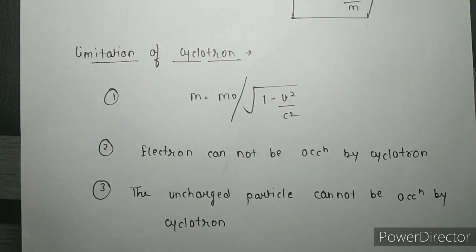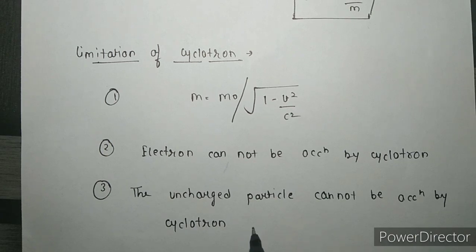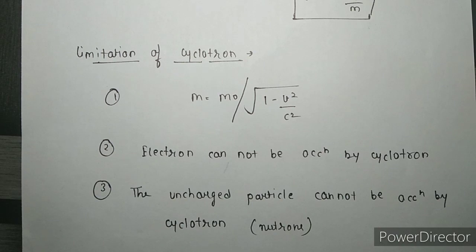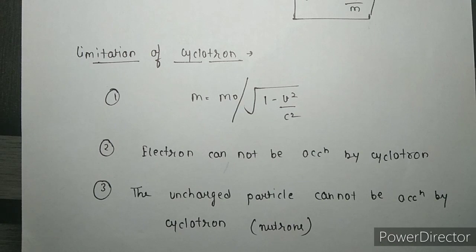The third and last limitation of the cyclotron is that uncharged particles, like neutrons, cannot be accelerated by the cyclotron. The basic concept of the cyclotron is that we can only accelerate positive ions or positively charged particles that have a comparatively high mass. These are the limitations of the cyclotron.